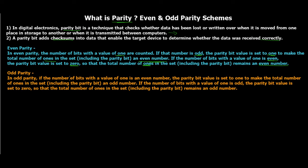In odd parity, if the number of bits with a value of one is even, the parity bit value is set to one to make the total number of ones in the set an odd number. If the number of ones is already odd, the parity bit value is set to zero so the total number of ones remains odd. Now, why are we doing this? Let's take a scenario where we have to transmit data.